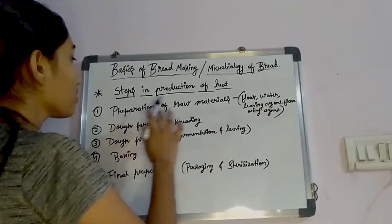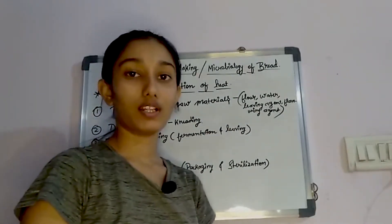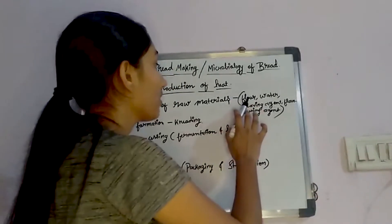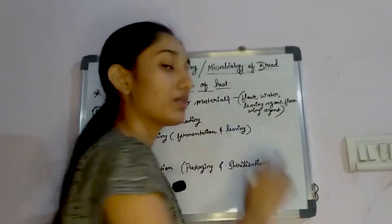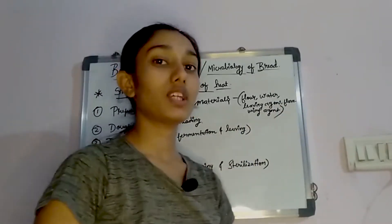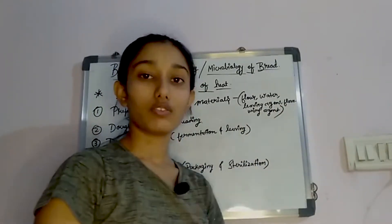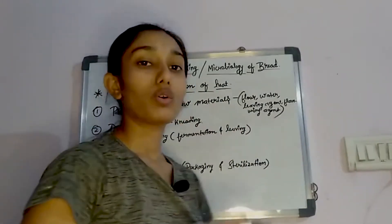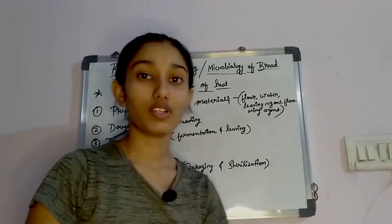Now let's see the step-by-step procedure. The first step is preparation of raw materials. We need to gather raw materials first, which are: flour, water, leavening agent, flavoring agent. If we add salt or sugar according to taste, that is the flavoring agent.